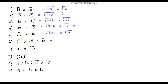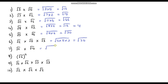The next one: we've got 3 surds that we're multiplying together, but the rule is exactly the same. We're just going to multiply all of these numbers together, so it's going to be the square root of 2 times 5 times 3. 2 times 5 is 10, 10 times 3 is 30, so that's the square root of 30. The next one: we've got 11 times 10 under the square root — 11 times 10 is 110 — so our answer is the square root of 110.